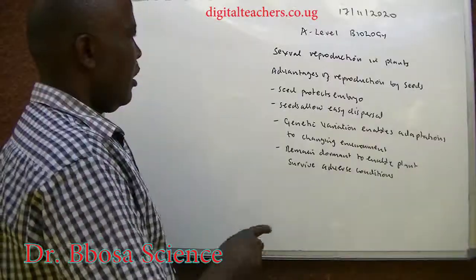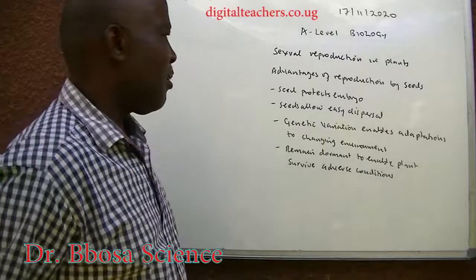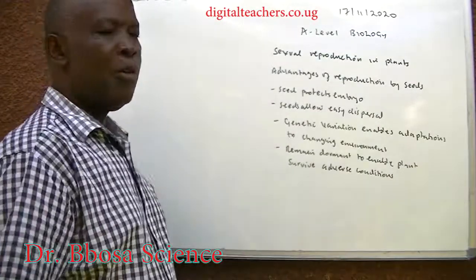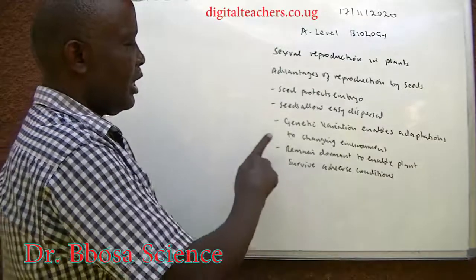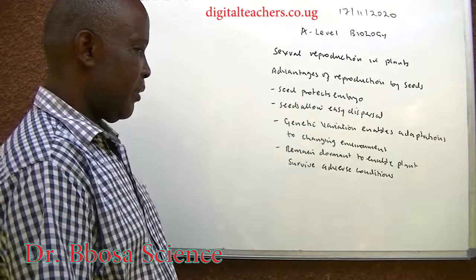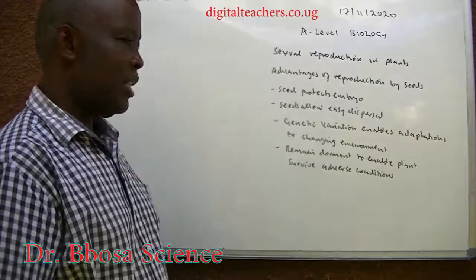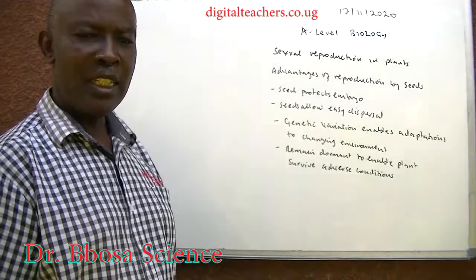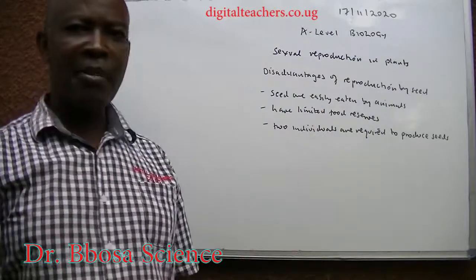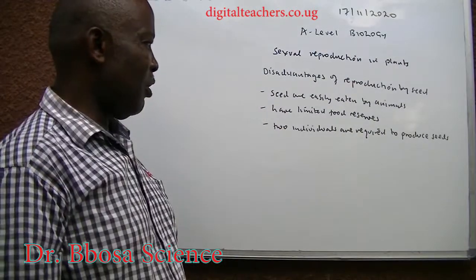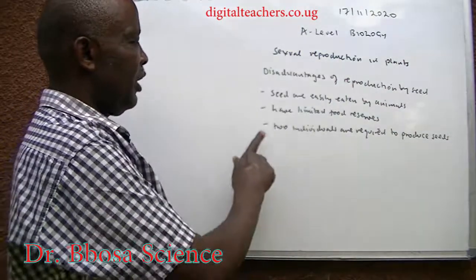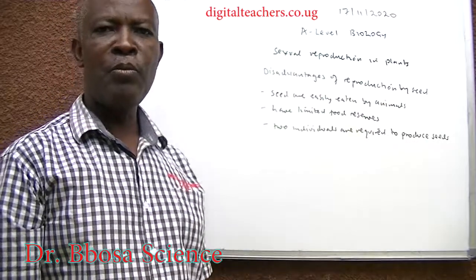Advantages of reproduction by seeds: seeds protect the embryo; seeds allow easy dispersal; genetic variation enables adaptation to a changing environment; seeds remain dormant to enable plants to survive adverse conditions. Disadvantages of reproduction by seeds: seeds are easily eaten by animals; seeds have limited food reserves; two individuals are required to form seeds.